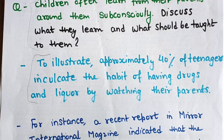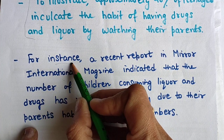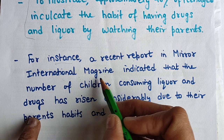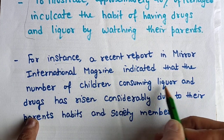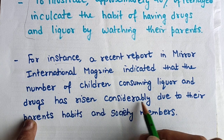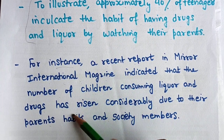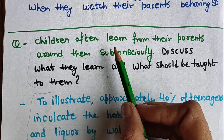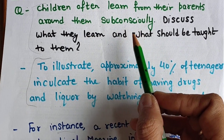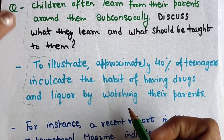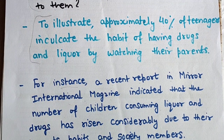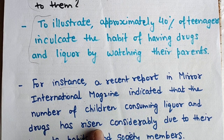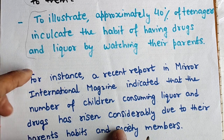Another example for the same question uses 'for instance': 'For instance, a recent report in Mirror International Magazine indicated that the number of children consuming liquor and drugs has risen considerably due to their parents' habits and society members.' This is also a valid survey-style example. The sentence structure 'indicated that the number of... has risen considerably due to...' is a strong structure worth learning.